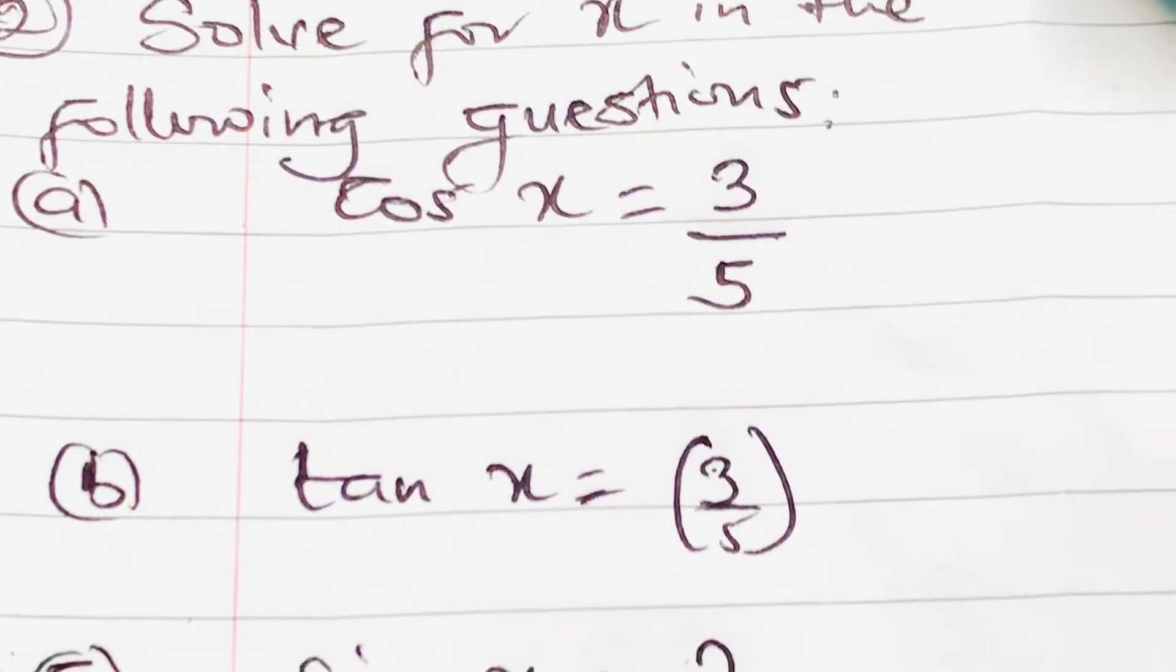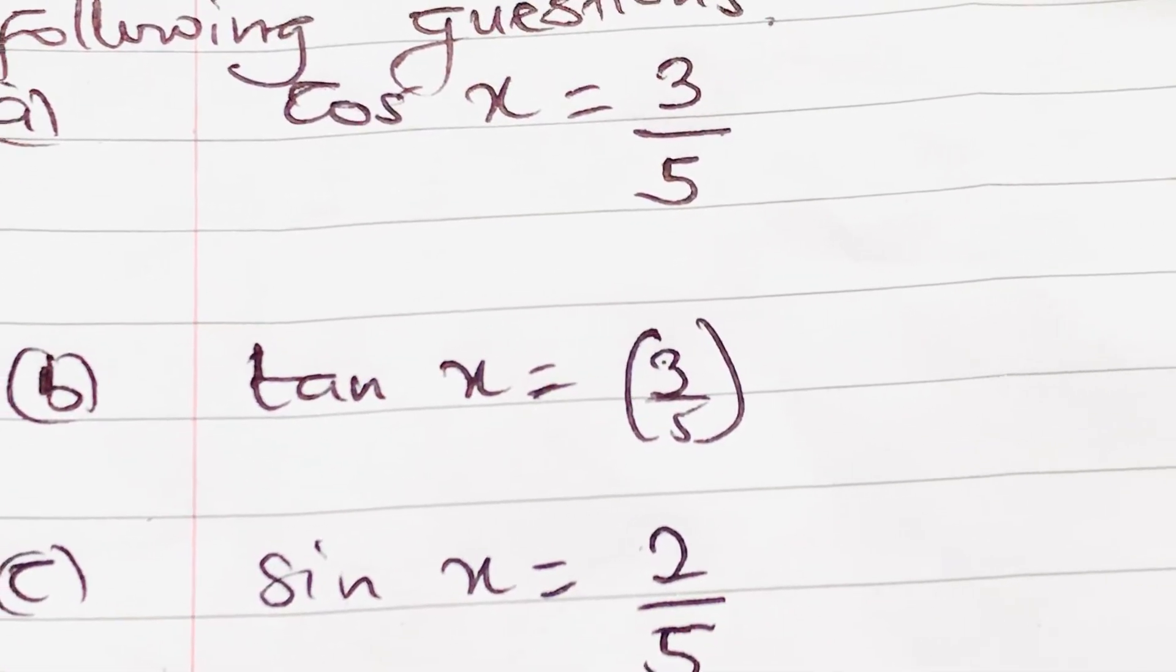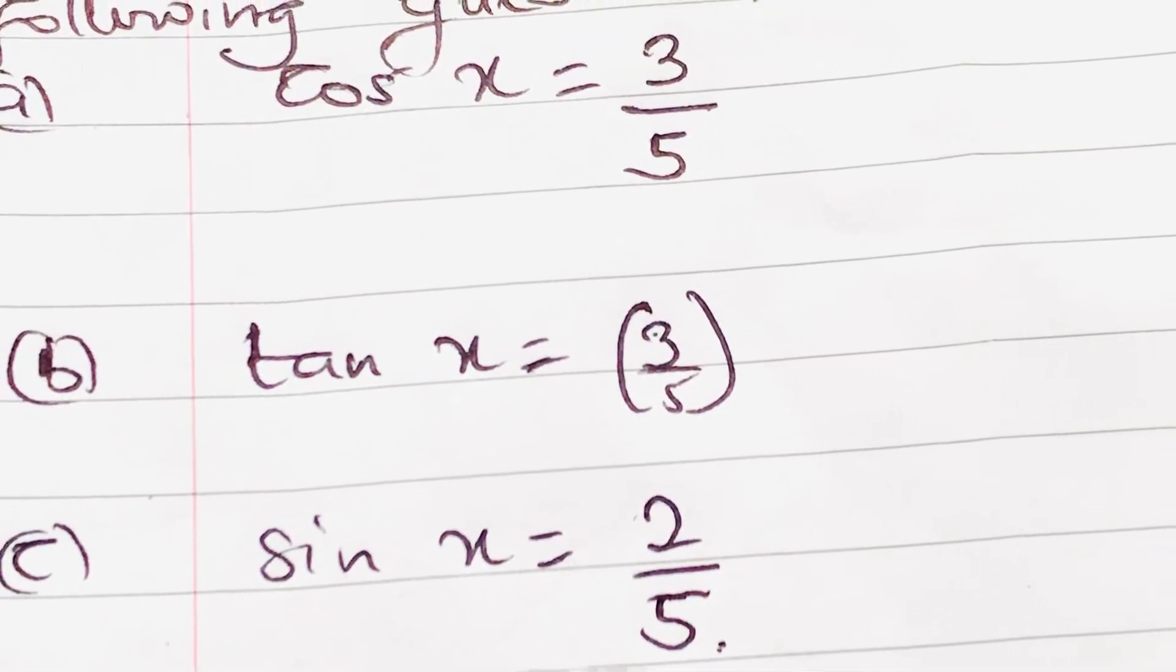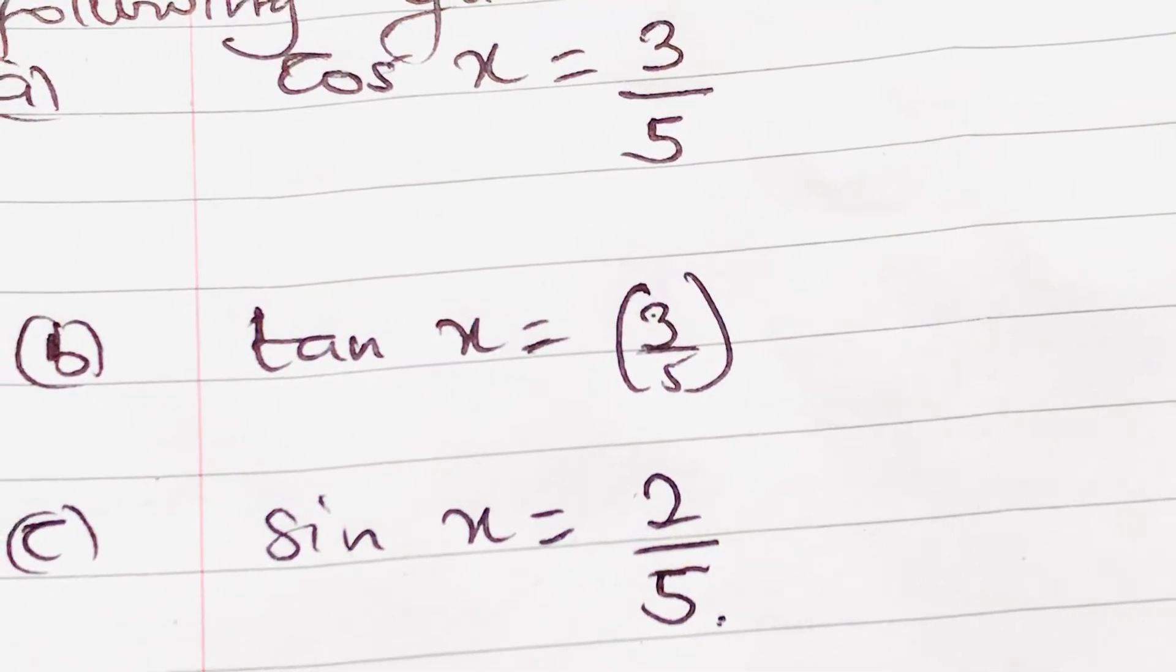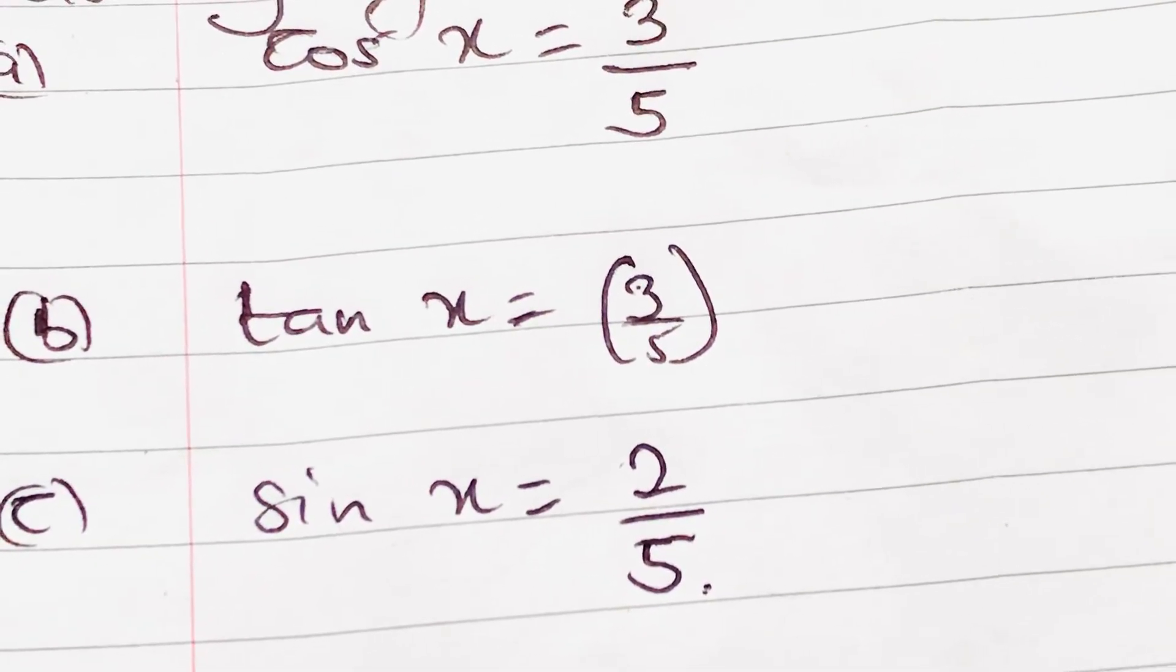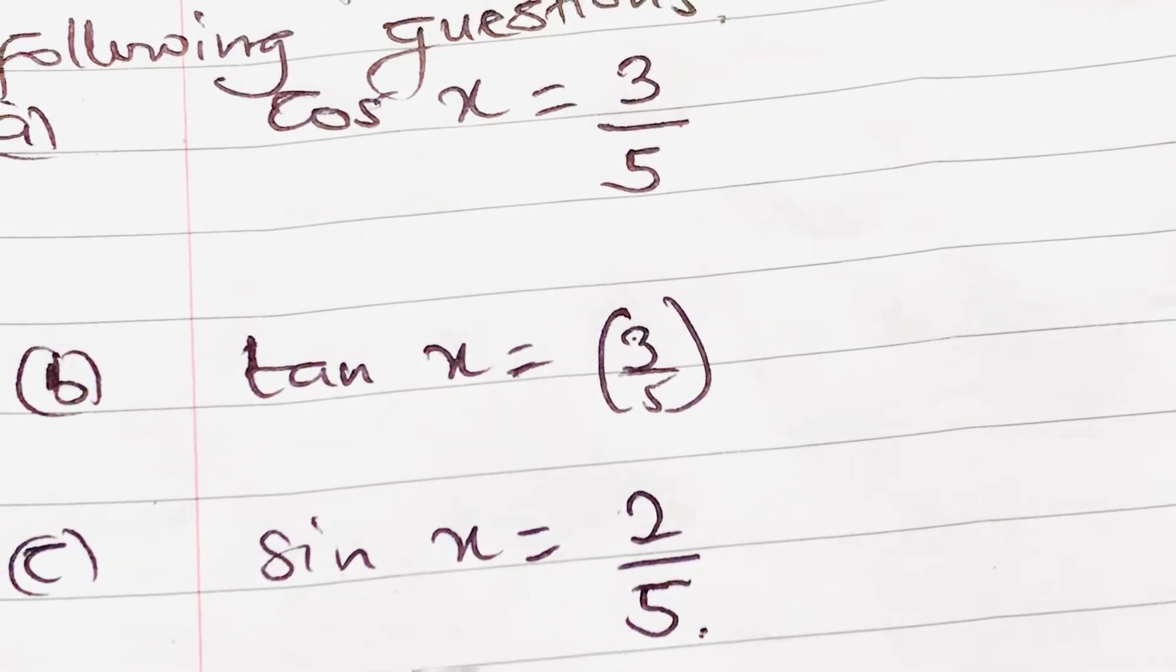Then B: Find X in sine X equals 3 over 5. The same approach. Then C: Find X in sine X equals 2 over 5.